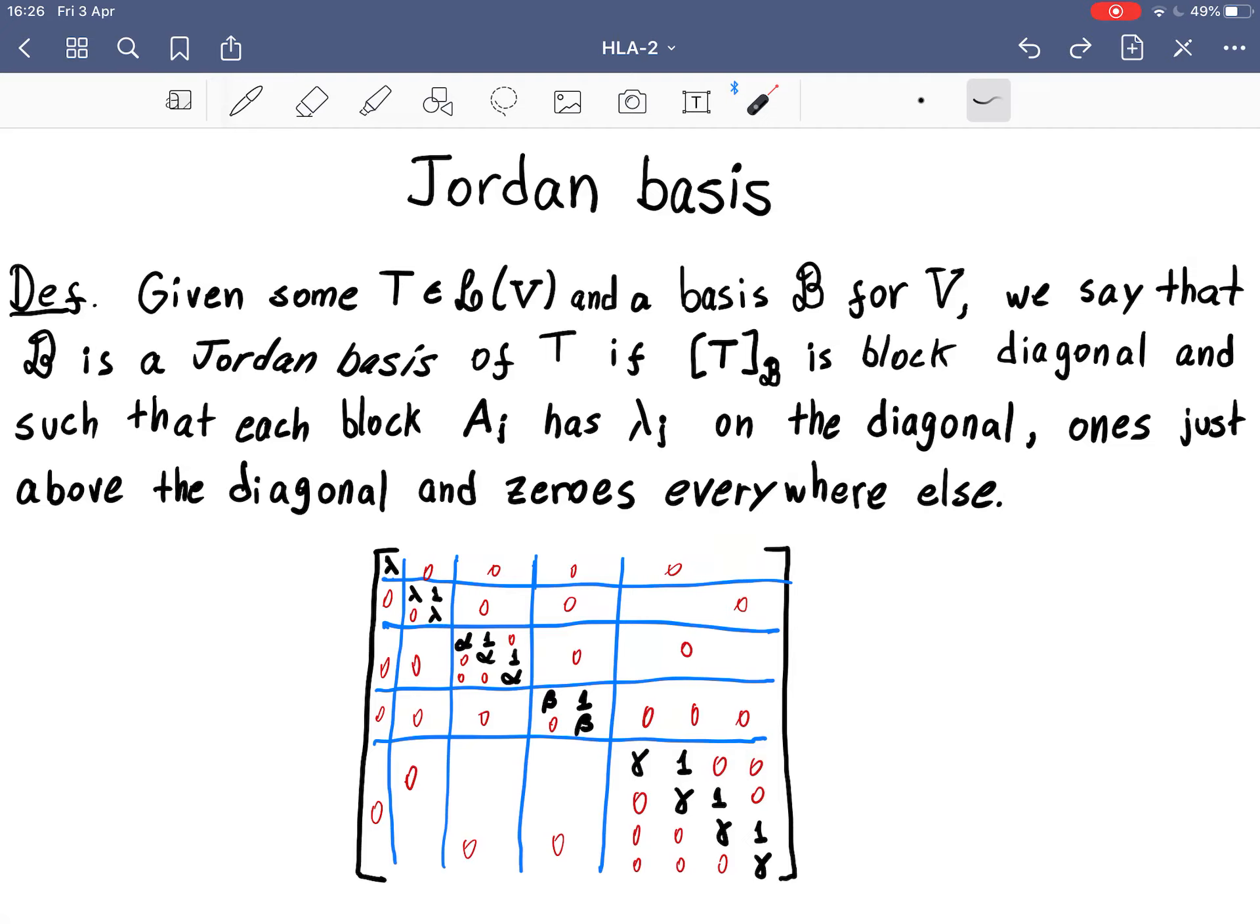So this is a Jordan matrix, or the matrix which is in Jordan form. And a Jordan basis is a basis that makes our operator look like this. So this is the definition. A Jordan basis for an operator T on some space V, we say that B is a Jordan basis if T_B has this form.